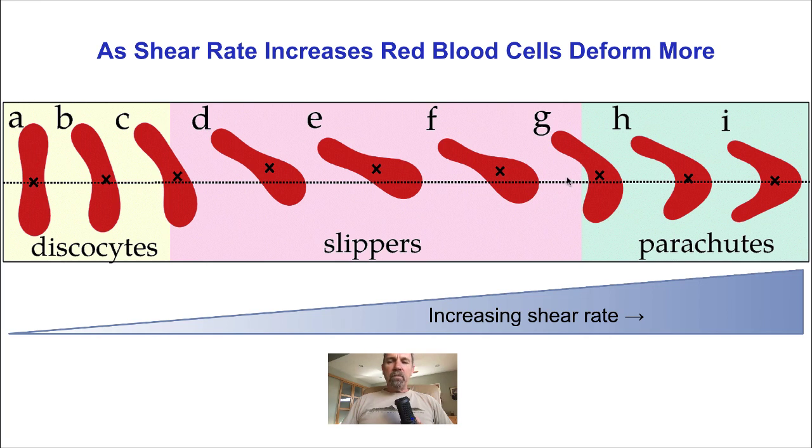Before, at even higher shear rates, they start to fold over and take on what's described as a parachute shape. This shape tends to reduce the tumbling of the cells in the flow and align the cells closer to the middle of the flow.